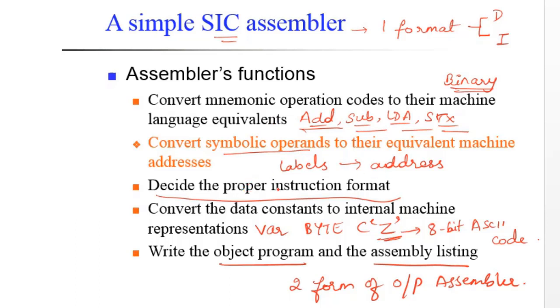We need to decide proper instruction format, which in turn is dependent on the addressing mode used. And then we have to convert all the data constants to internal machine representations. And finally, the assembler will generate assembly listing as well as the object program. We will see both of them in our further slides.